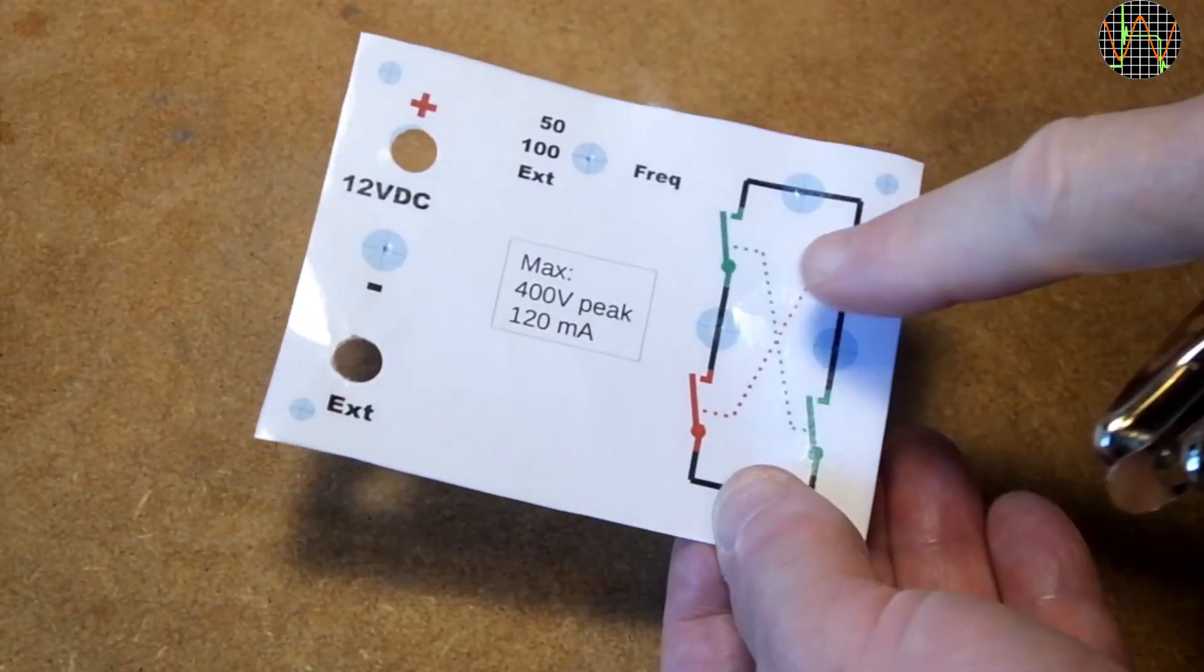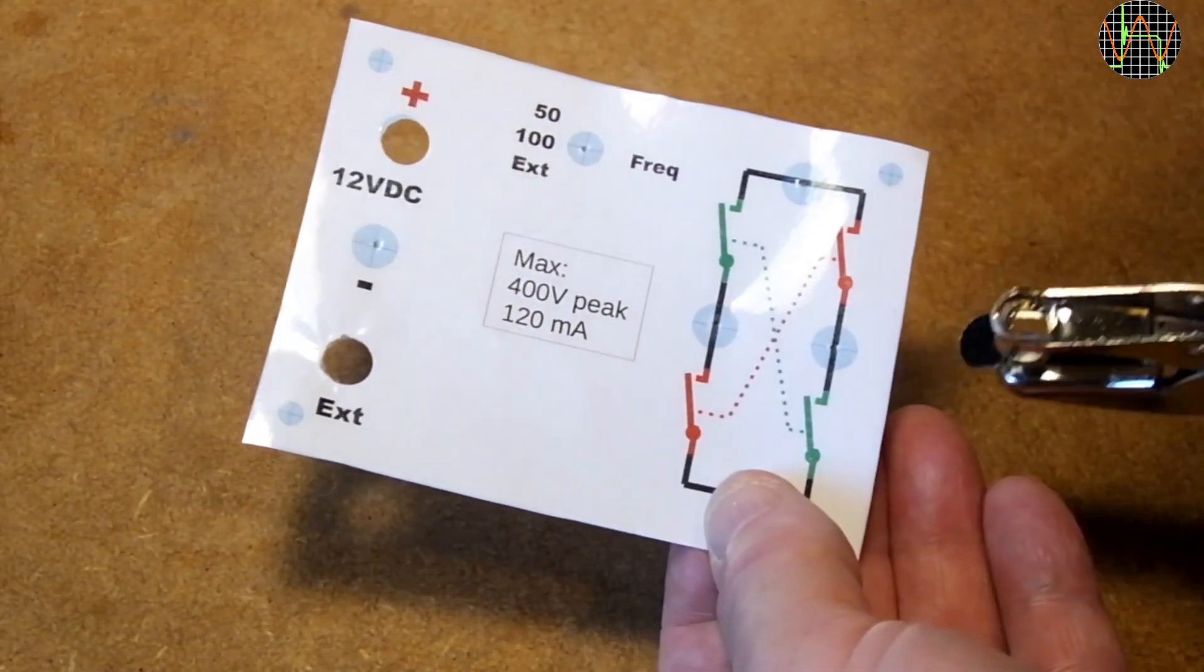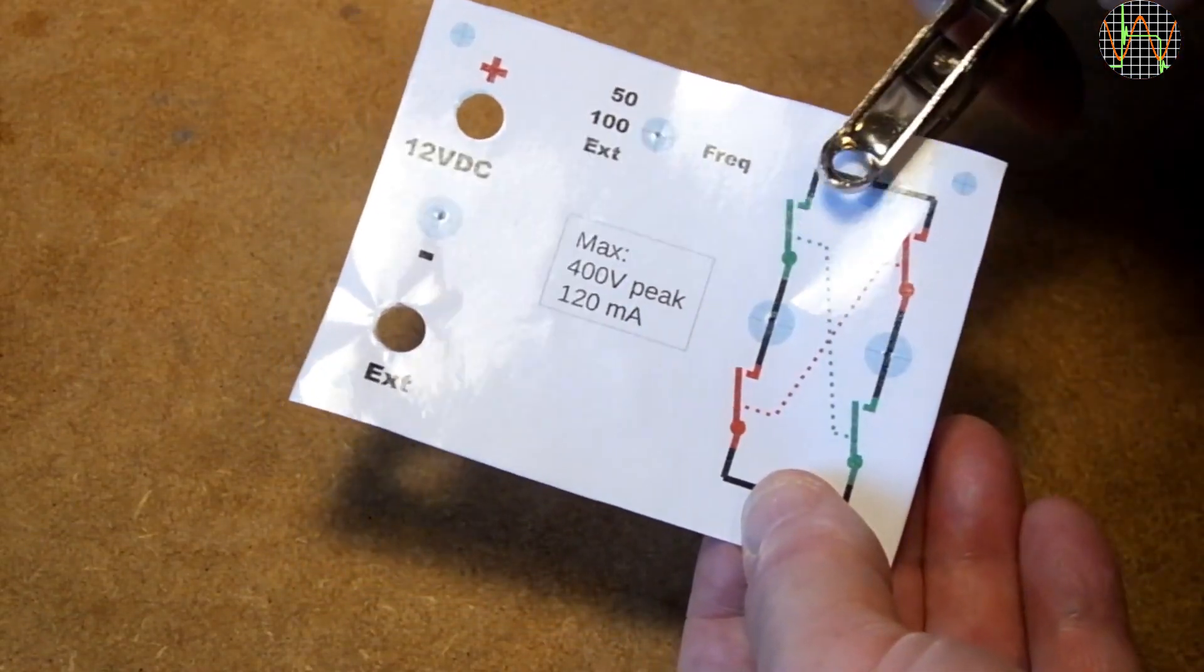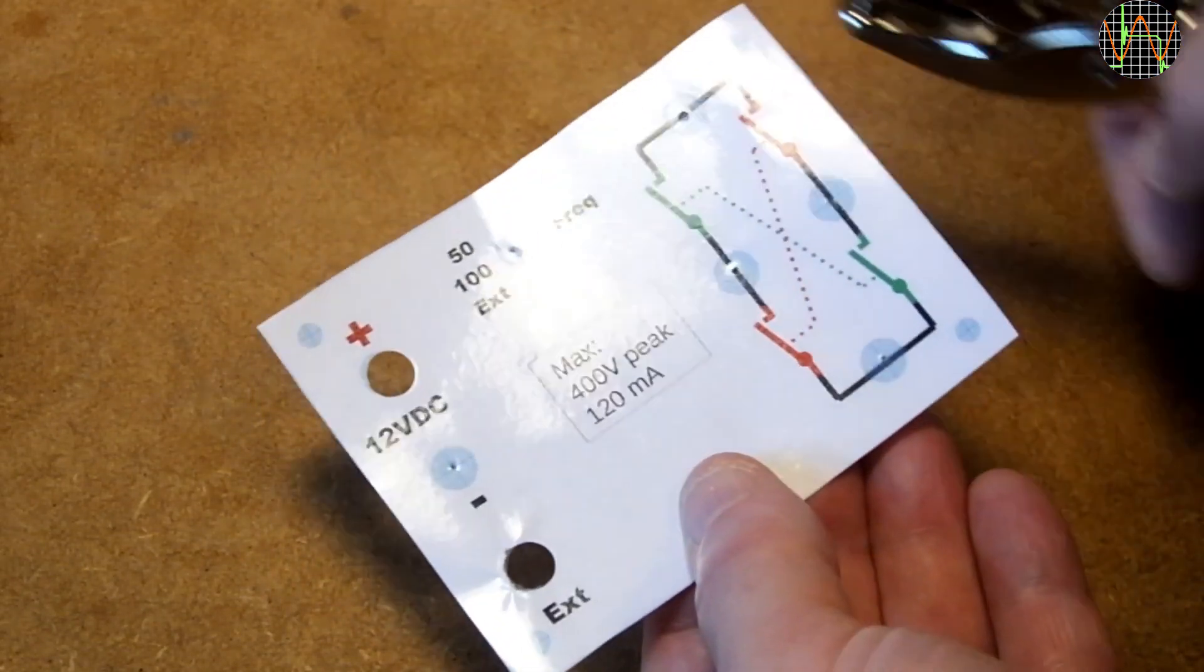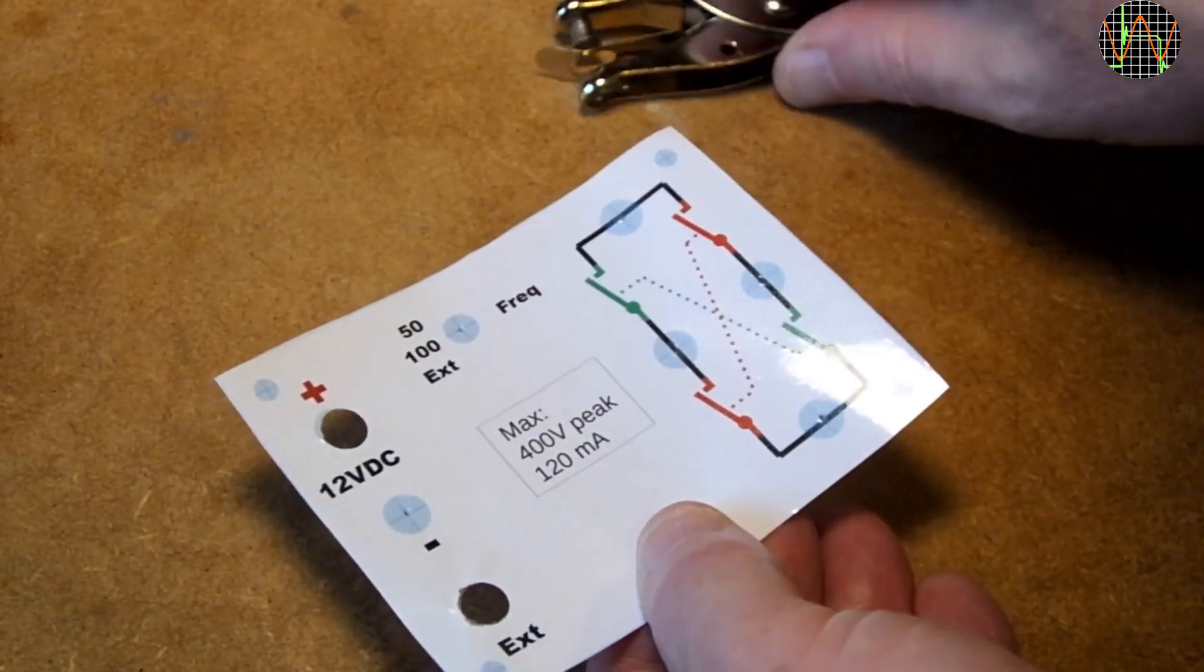While the single hole punch is the easiest method, it has its limits too, and one of them is obviously its limited reach. There are some holes that are just too far inside.